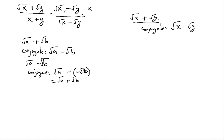The middle terms cancel because you have minus √y times √x and plus √y times √x, so they go away. Then the last term gives minus y, because the square root of y squared is just y, and the minus sign remains. So the numerator becomes x minus y.